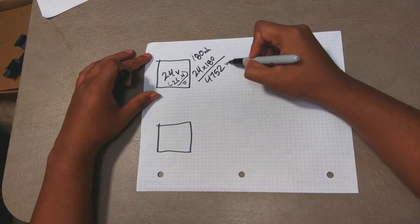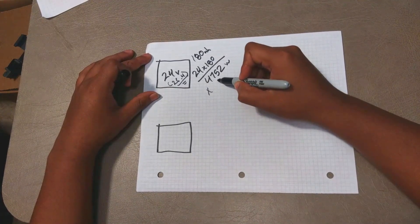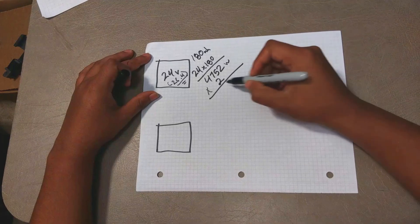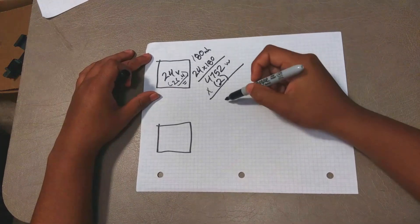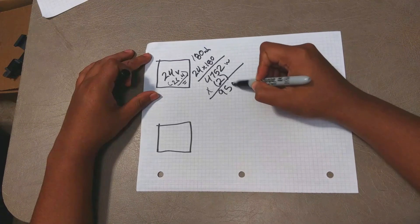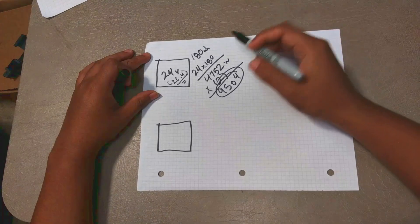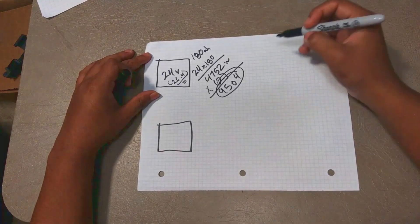So once you know that you multiply that by the number of batteries you have. So we have two batteries so we multiply it by two and the total number of watts inside our whole battery bank is 9504 and that's the total amount of watts that you have in your whole system.